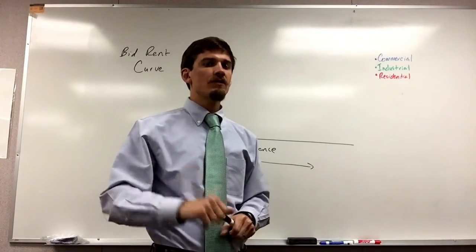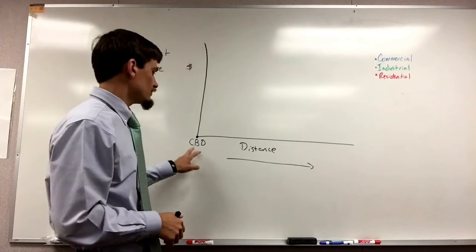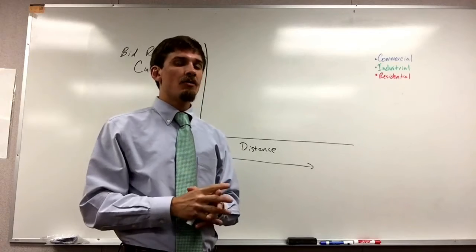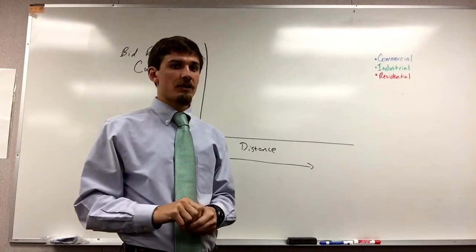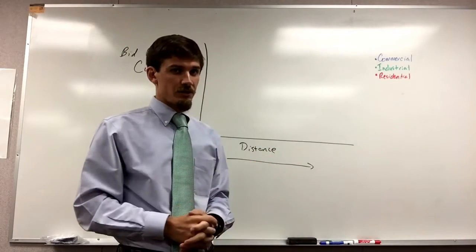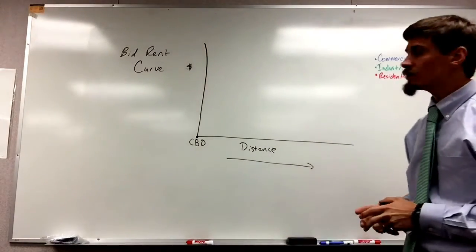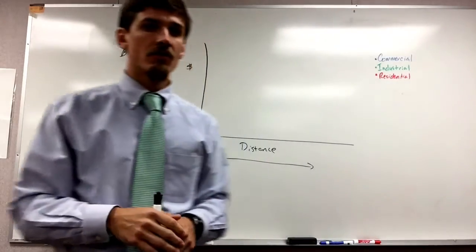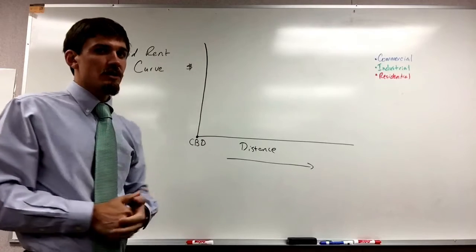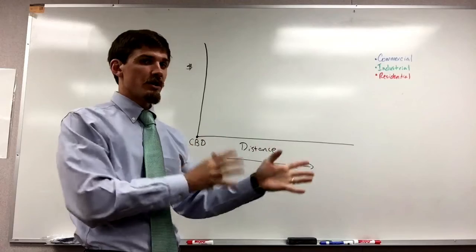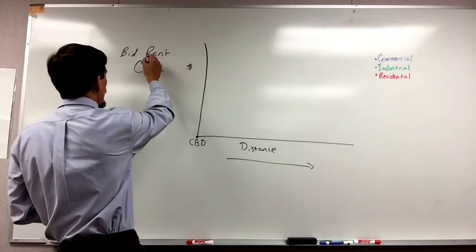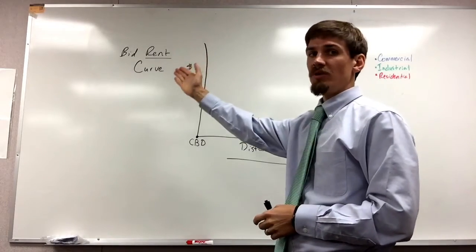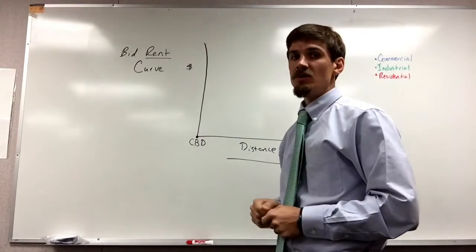When looking at the bid-rent curve, we assume there are three different types of activities taking place as it relates to distance from the CBD: commercial activities, industrial activities, and residential activities. For simplicity we focus on just these three. The bid-rent curve asks how much each of these activities is willing to pay for land as it relates to distance from the CBD. This concept of 'bid' refers to how much each activity is willing to bid for land based on its proximity to the CBD — a concept related to Von Thünen's model from the agriculture unit.